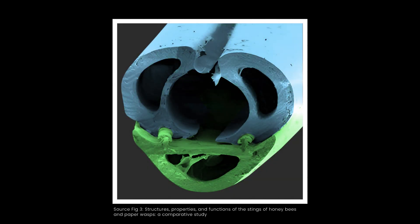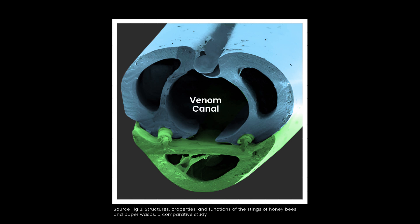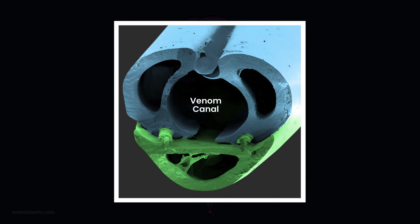Furthermore, each lancet shaft has a curled, flexible latch connecting it to its companion. The latch on the right was damaged when this cross-section was made. I'll fix that here with some Photoshop magic. Altogether, these structures form a watertight hypodermic needle, allowing venom to flow through the inner canal without leaking at any of the joints.